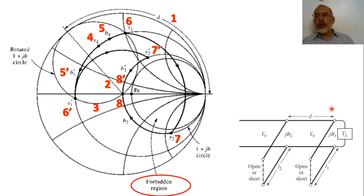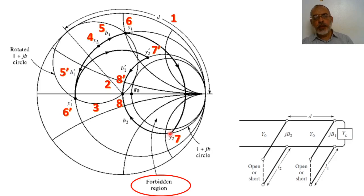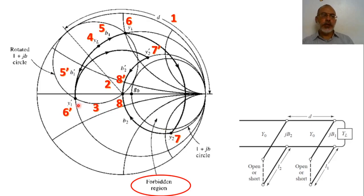After the fourth step, we determine the value of positive B1 or negative B1-dash required to make the total admittance at this point intersect with the rotated 1 plus jB circle. The intersection is at either y1 or y1-dash depending on whether we chose positive jB1 or negative jB1-dash. Now we move this distance D towards the generator — this means we rotate back this rotated 1 plus jB circle to the original 1 plus jB circle. The arc from y1 rotates until it intersects with the original 1 plus jB circle. The other solution y1-dash will intersect with the original 1 plus jB circle at the point y2-dash.